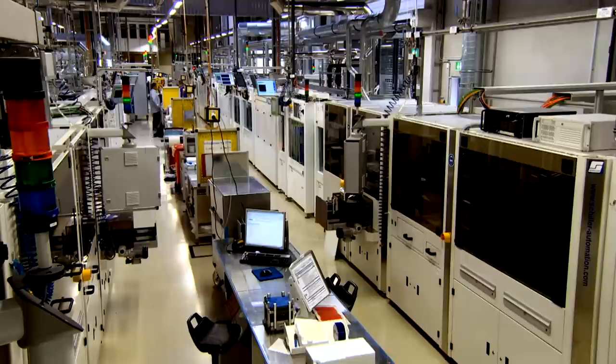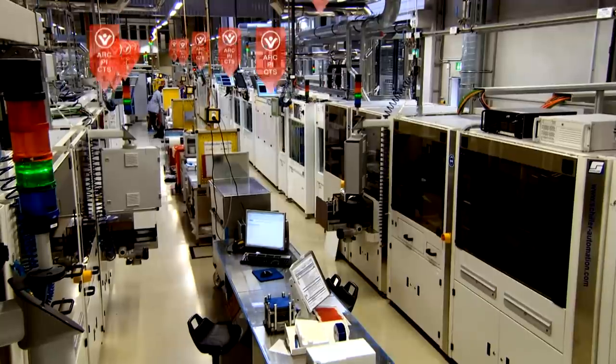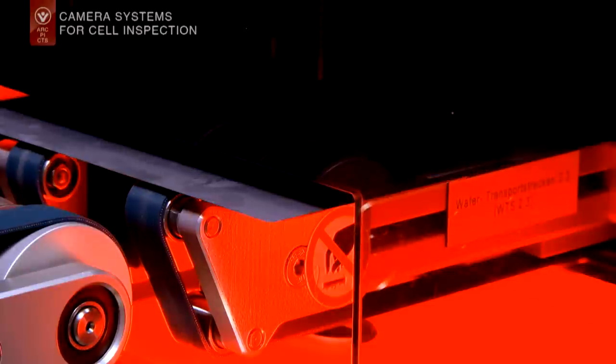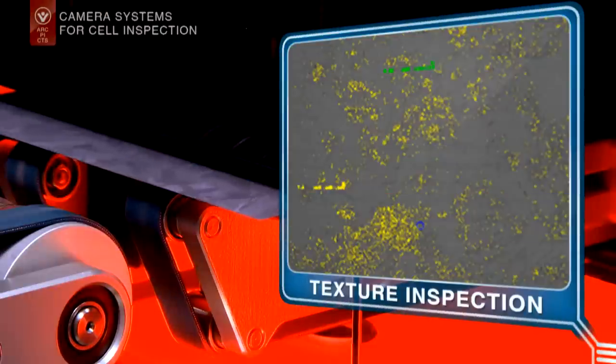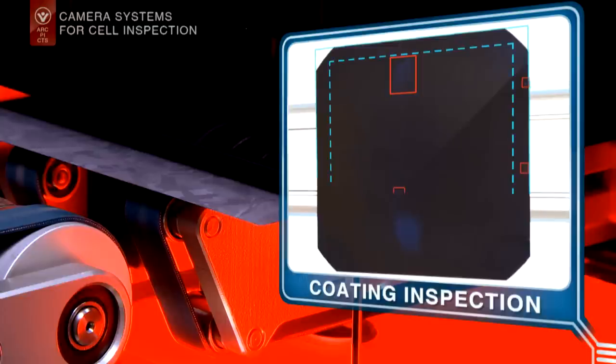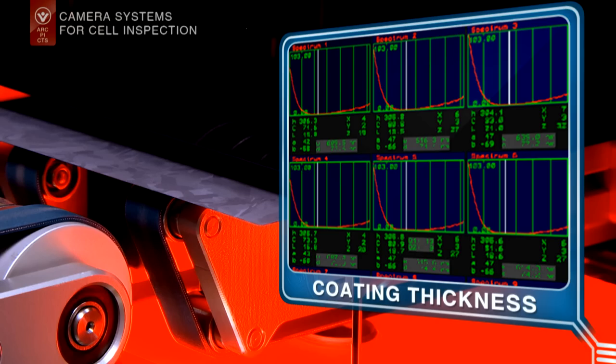After texturization, the Vinspec Solar ARC systems identify process faults as deviations in the surface reflectivity as well as by measuring the thickness of the anti-reflective coating and detecting irregularities in the coating systematically and reliably.